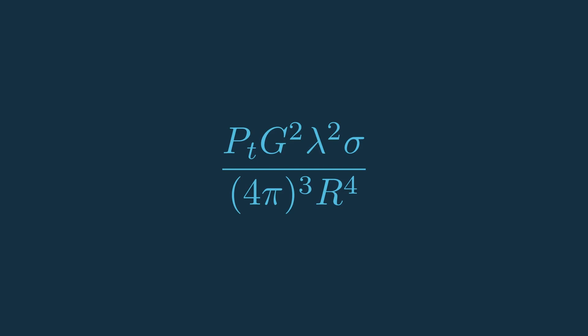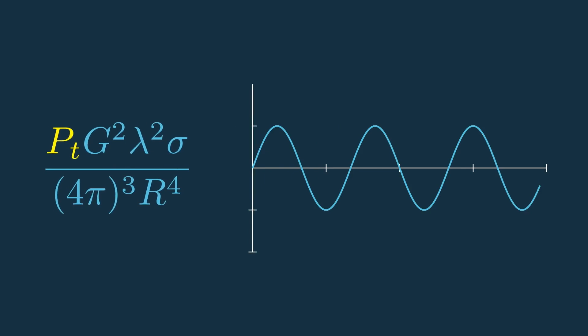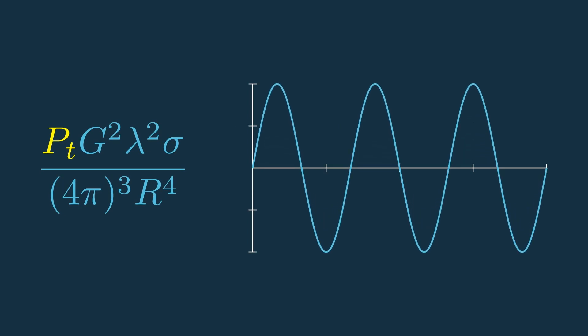This received signal power can be influenced by each of these components individually, which would in turn affect the SNR. The most straightforward way to increase SNR would probably be to increase the transmit power, because the more power you transmit, the more power will be reflected off the target, and the more power you'll receive back.